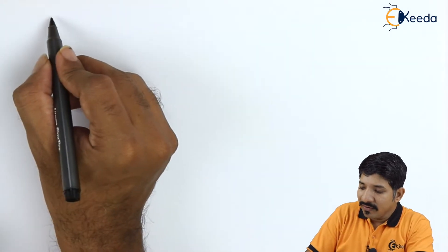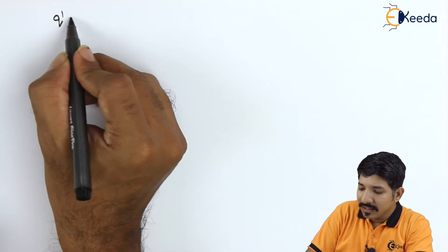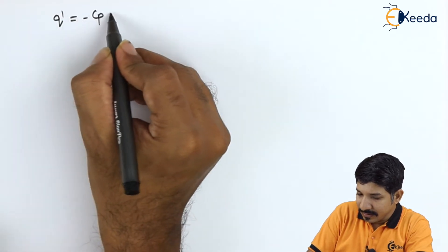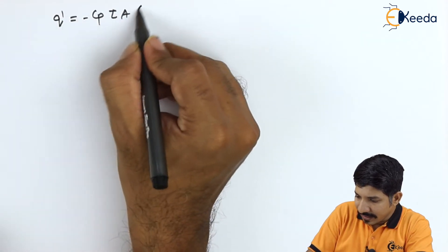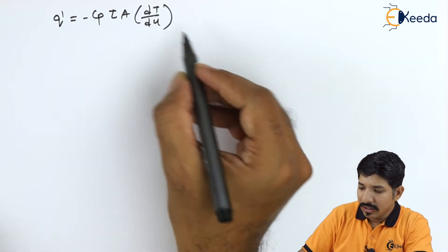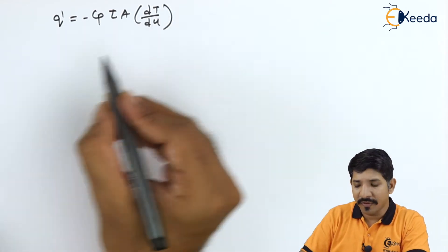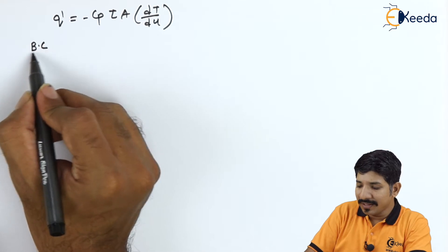So the equation that we have, I will write it again, q' is equal to minus Cp tau area dt by du. Now to solve this, we must know the boundary conditions. Now what are my boundary conditions? To talk about the boundary conditions, we know that the velocity at this point is 0.